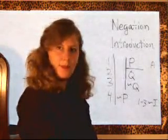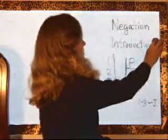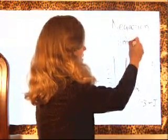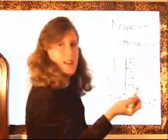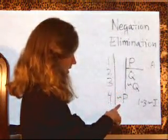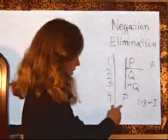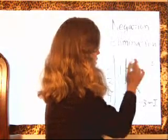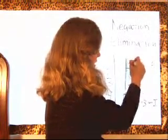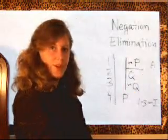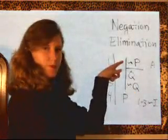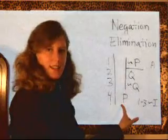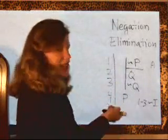The negation elimination rule is really similar — it is the exact opposite of what we just did. Instead of introducing the negation, we just want to prove a positive. So we start by assuming its opposite, which in this case is already a negation. In negation elimination, we assume that something's not true, we derive a contradiction, and then that tells us that the thing we started with actually is true.